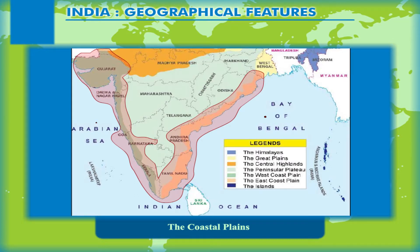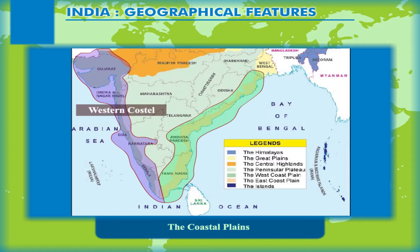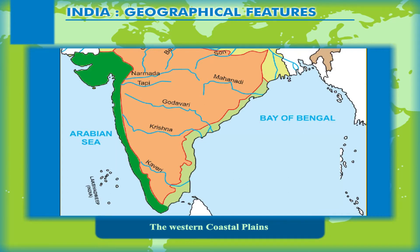The coastal plains border the coastal areas along the Arabian Sea and the Bay of Bengal. To the east and west of the triangular peninsular plateau, these plains meet at the southern tip of India. They are divided into two physical subdivisions: the Western Coastal Plain and the Eastern Coastal Plain. The Western Coastal Plains lie along the coast of the Arabian Sea, bounded by the Western Ghats to the east, extending from the Kutch region in Gujarat up to Kanyakumari in the south.